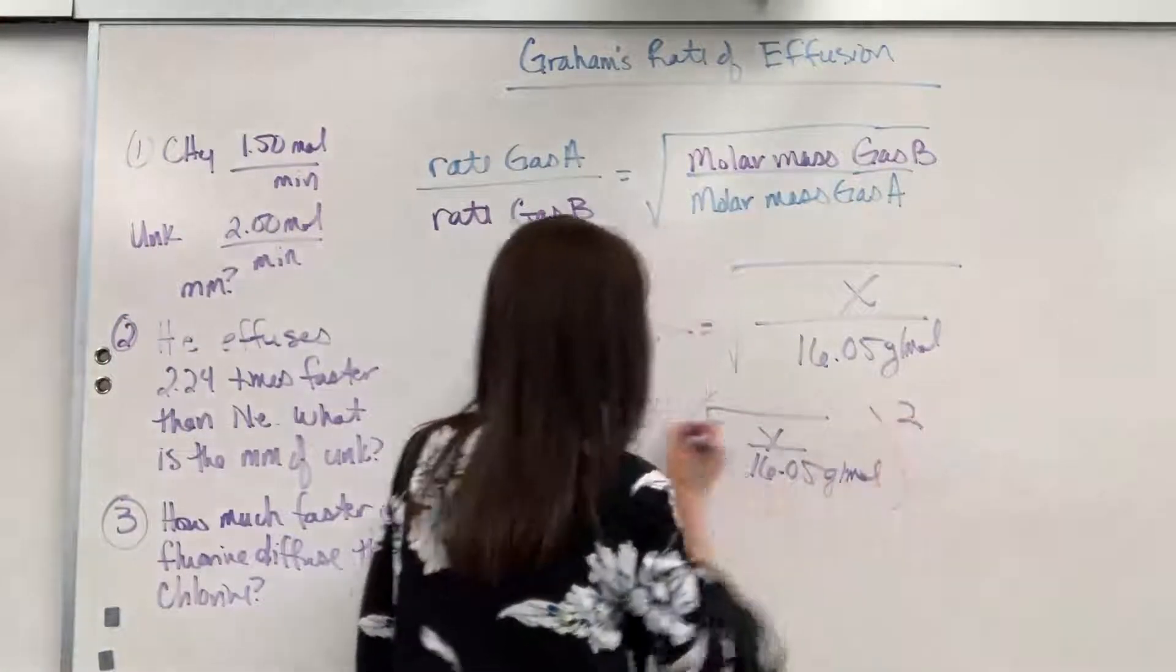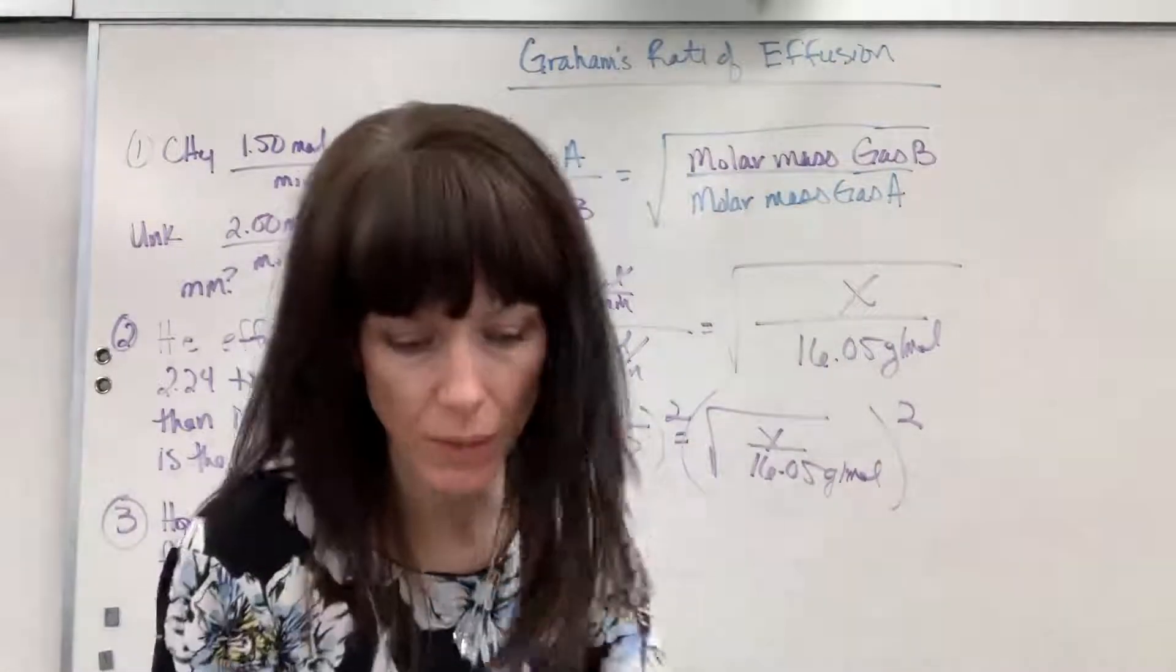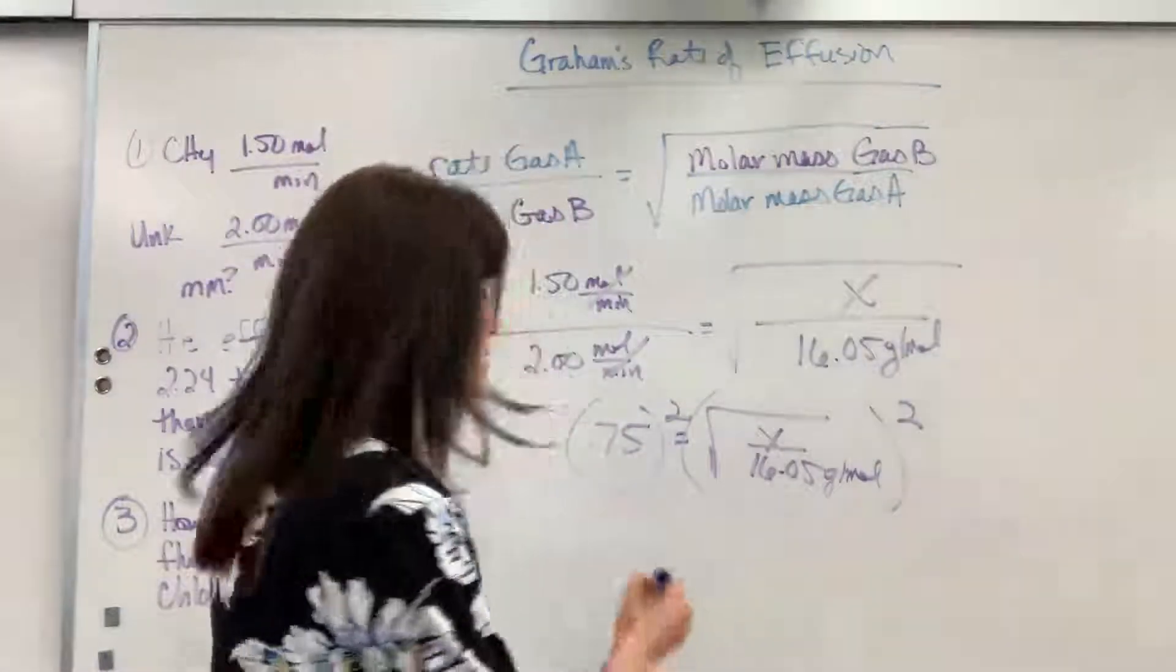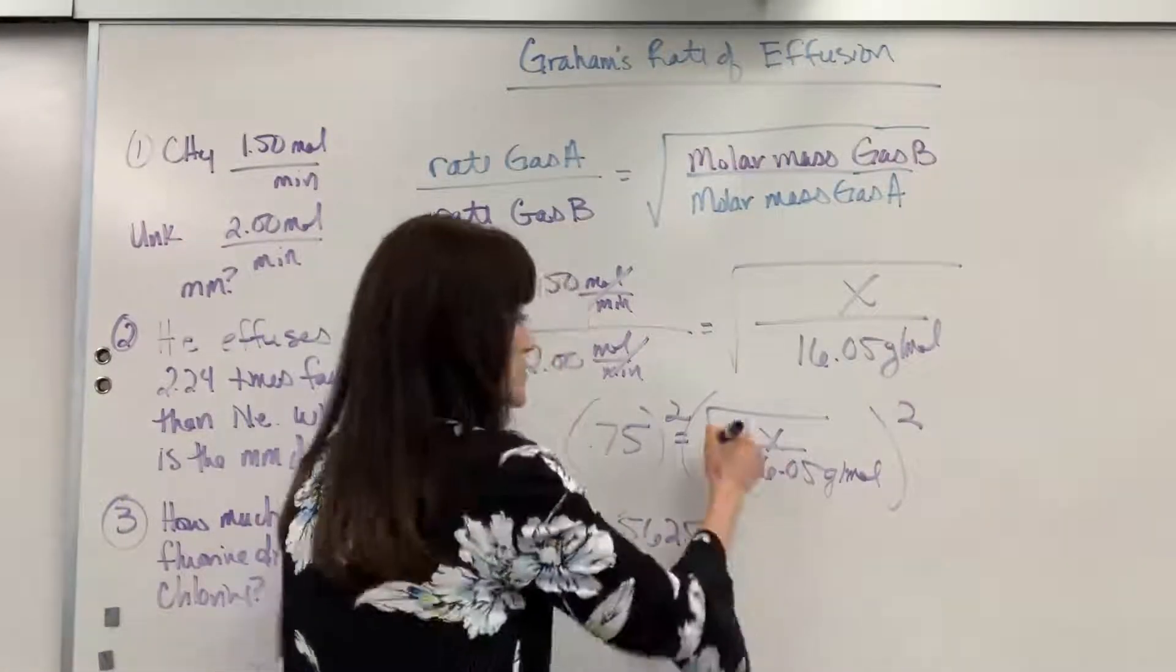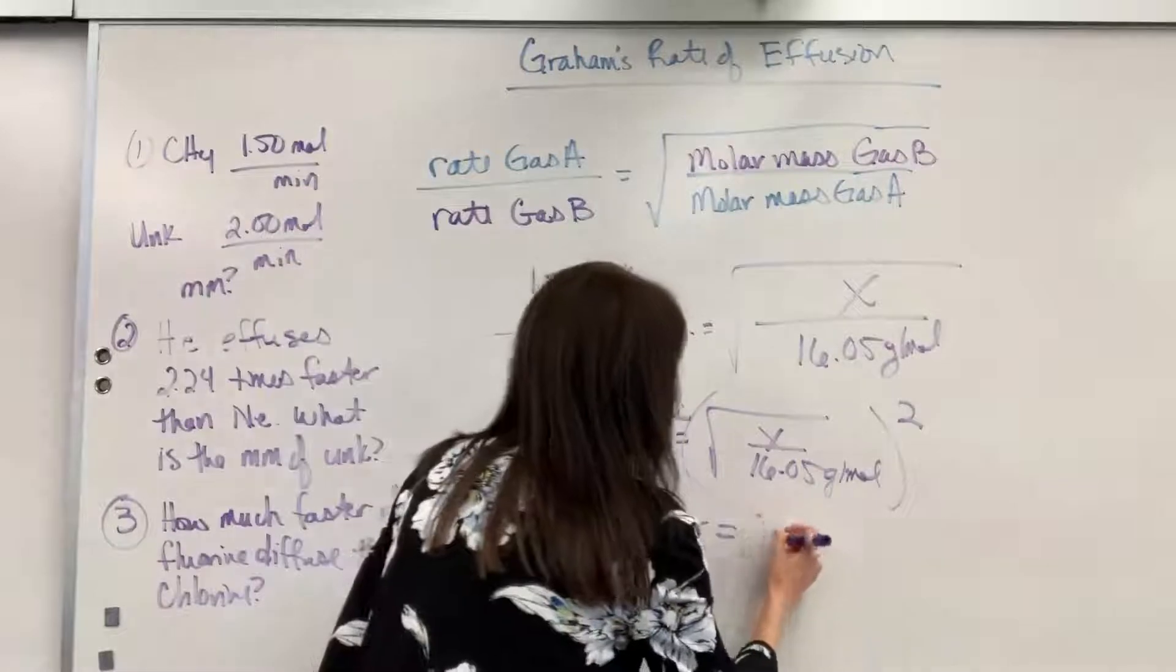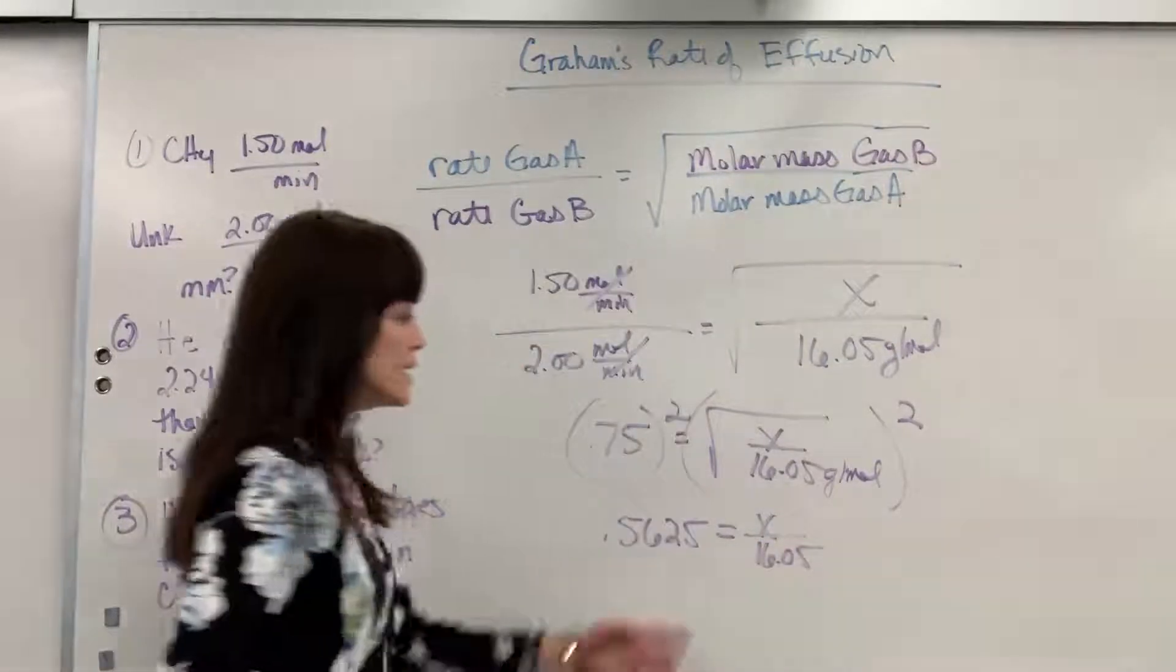So, let's square that. And we get 0.5625 equals, so the square root's now gone, x divided by 16.05.